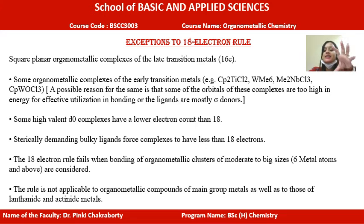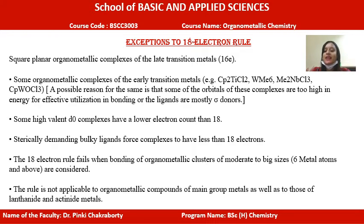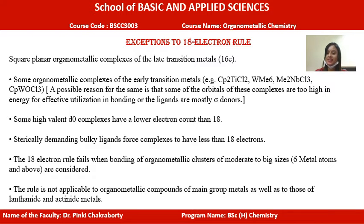The second exception is D0 high-valent complexes — organometallic complexes made up of metals with zero d electrons in their high-valency state. In that case, the number of d electrons is too low to reach 18. The third exception is sterically bulky ligands: if a complex has sterically bulky ligands, fewer ligands can fit around the metal, so the electron contribution from ligands is reduced, resulting in a complex with fewer than 18 electrons.